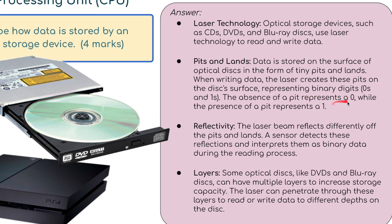The absence of a pit represents a zero while the presence of a pit represents a one. Reflectivity: the laser beam reflects off the pits and lands. A sensor detects these reflections and interprets them as binary data during the reading process. Layers: some optical disks such as DVDs and Blu-rays have multiple layers to increase storage capacity. The lasers can penetrate through these layers to read or write data to different depths on the disk.